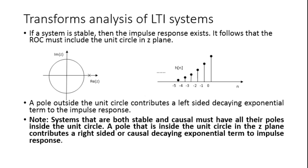For H of n, the ROC is shown in terms of the imaginary and real axes. A pole outside the unit circle contributes a left-sided decaying exponential to the impulse response. Note that systems that are both stable and causal must have all their poles inside the unit circle. A pole inside the unit circle contributes a right-sided or causal decaying exponential term to the impulse response.